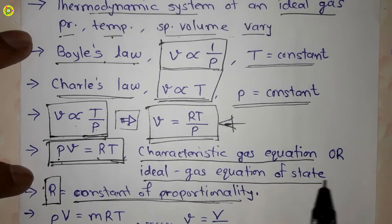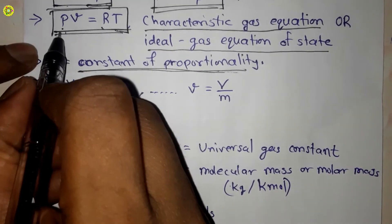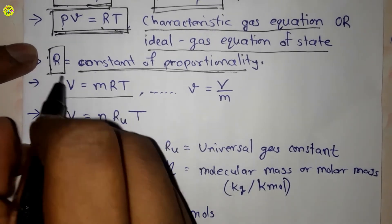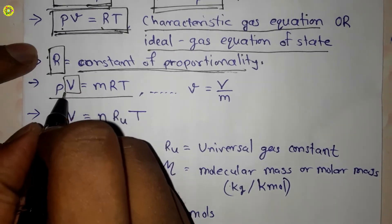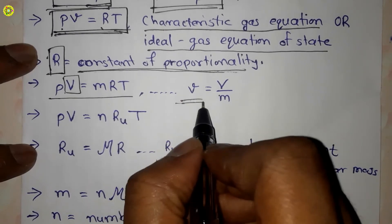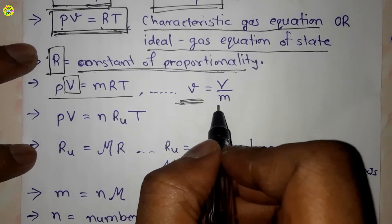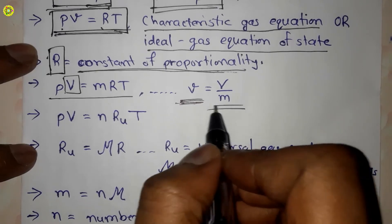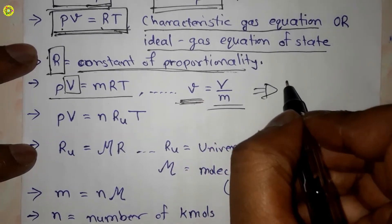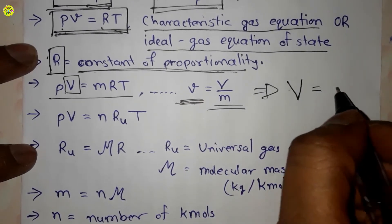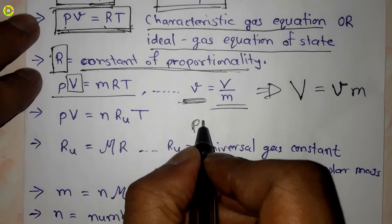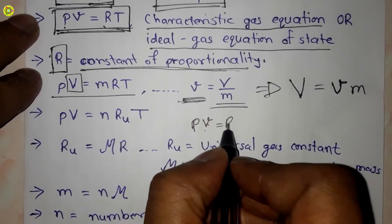The characteristic gas equation can also be written as PV = mRT, where V here is the total volume. Specific volume is equal to total volume upon mass m. So total volume equals specific volume into mass. Substituting into PV = RT, we replace the specific volume v with capital V upon m.